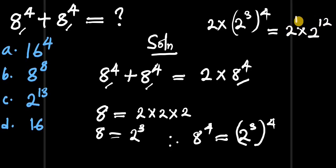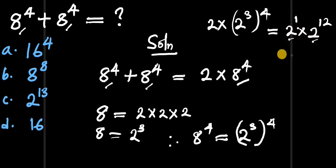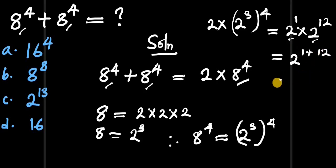This 2 is to the power of 1, since 2 to the power of 1 is 2. So we have 2 to the power of 1 times 2 to the power of 12. If you remember your indices rules, when the bases are the same you simply add the exponents: 1 plus 12 equals 13, giving us 2 to the power of 13.